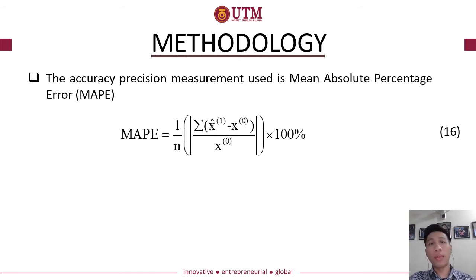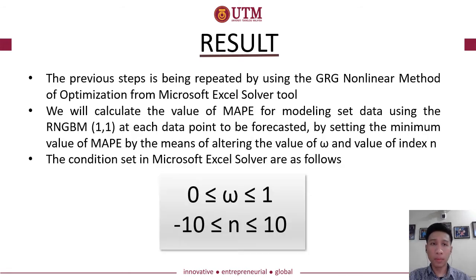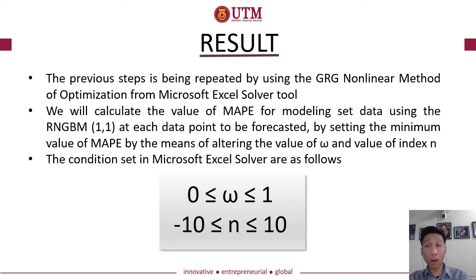The accuracy precision measure used in this research is the Mean Absolute Percentage Error (MAPE). Based on Table 1, we use the OLS method in the NGBM(1,1) model to calculate the values of parameters a and b from years 2012 to 2016. These steps are then repeated using the GRG non-linear method from the Microsoft Excel Solver tool. From the modeling dataset, we obtain the MAPE value, and we then set MAPE to its minimum by adjusting epsilon from 0 to 1 and index n from negative 10 to 10.